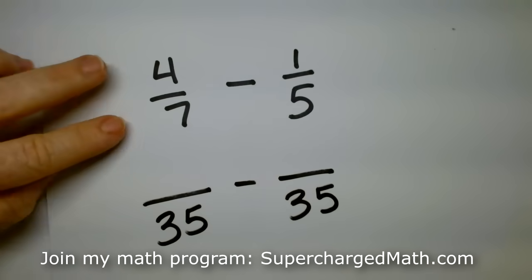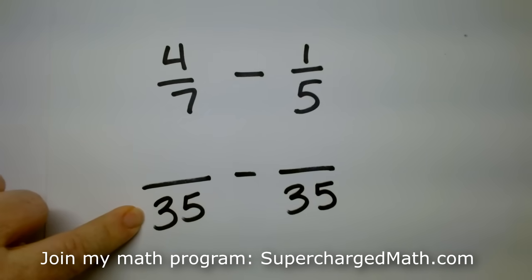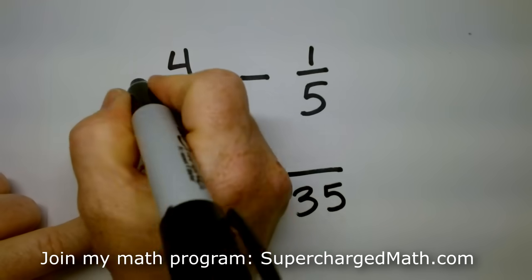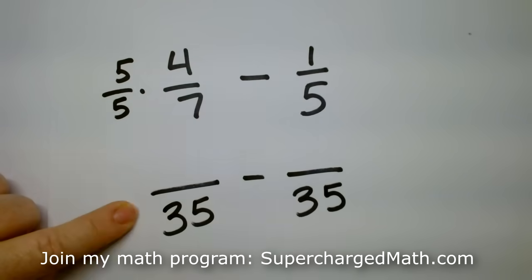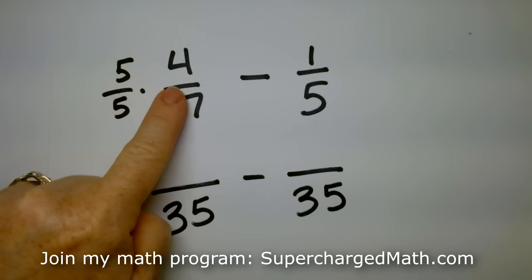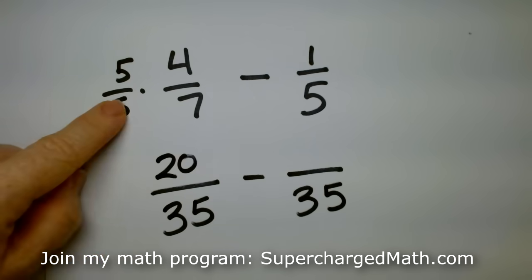So what do I have to multiply the bottom by? So let's work on this one first. So seven times something gave me thirty-five. Do you remember what it was? Seven times, yeah, seven times five. So I'm going to multiply this one by five over five. Five times seven is thirty-five. Five times four is what goes on top, the twenty.